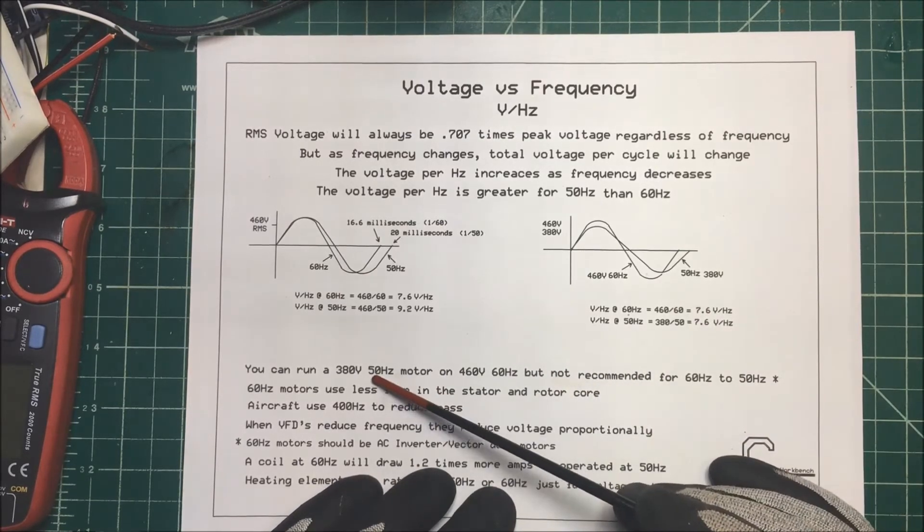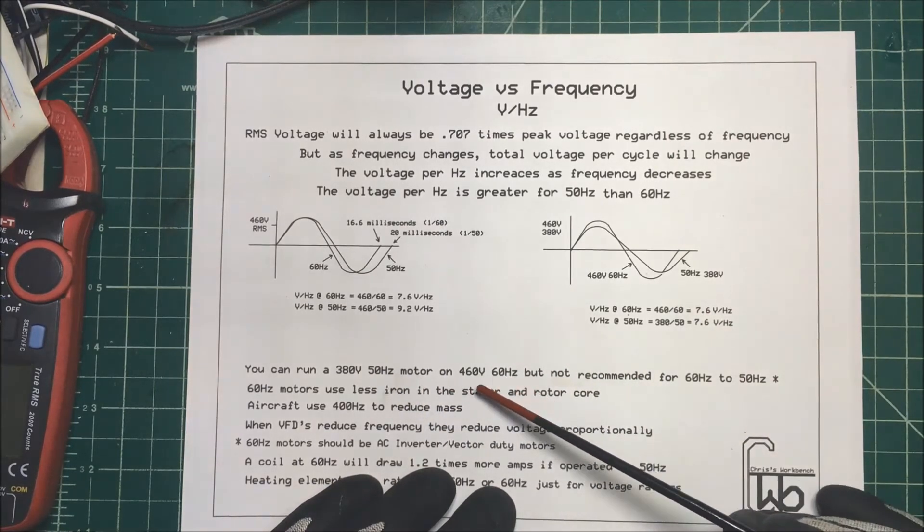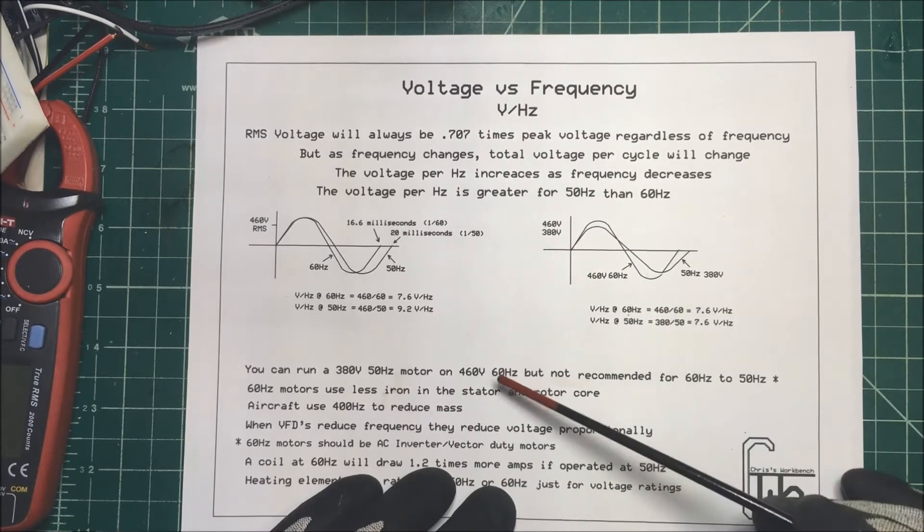And that's why we can take a 380 volt, 50 hertz motor, and we can run it at 460 volts, 60 hertz.